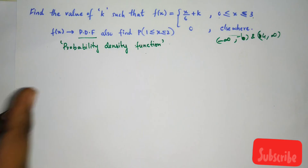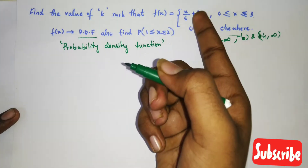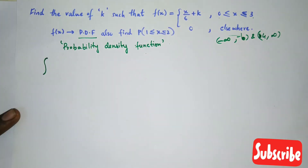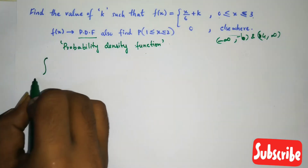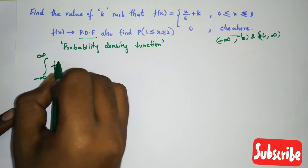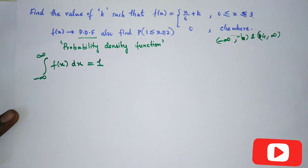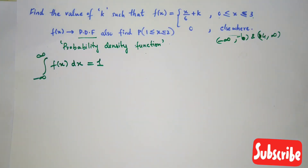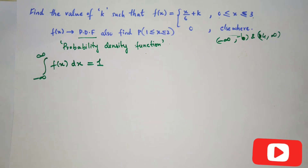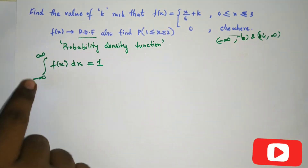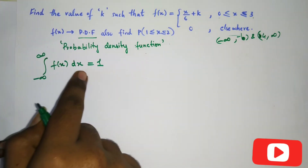Since f(x) is a probability density function, we need to find the value of k. We apply the condition: the integral from minus infinity to infinity of f(x) dx equals 1. This is the same logic as in discrete probability functions where we did summation of p(x) equal to 1 — the same logic applies here for PDFs.